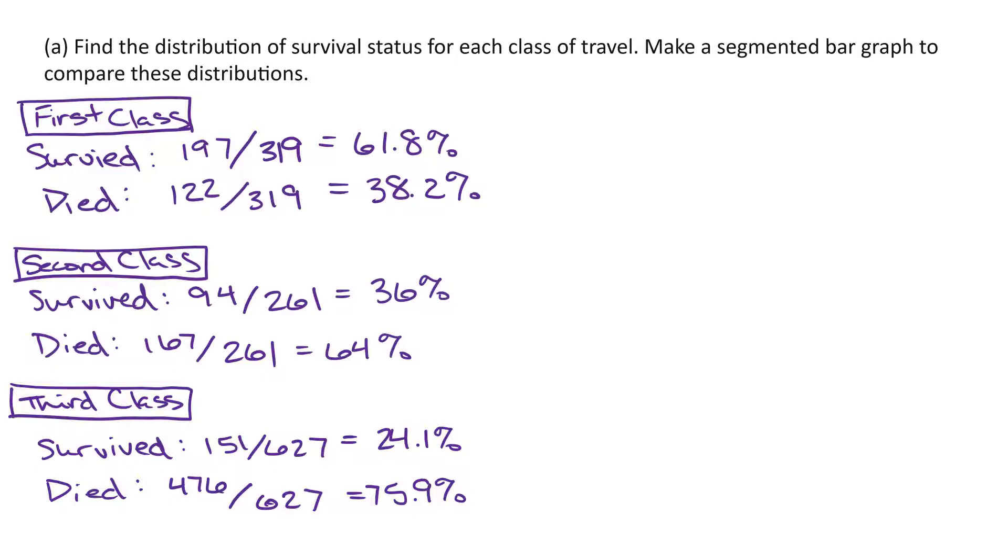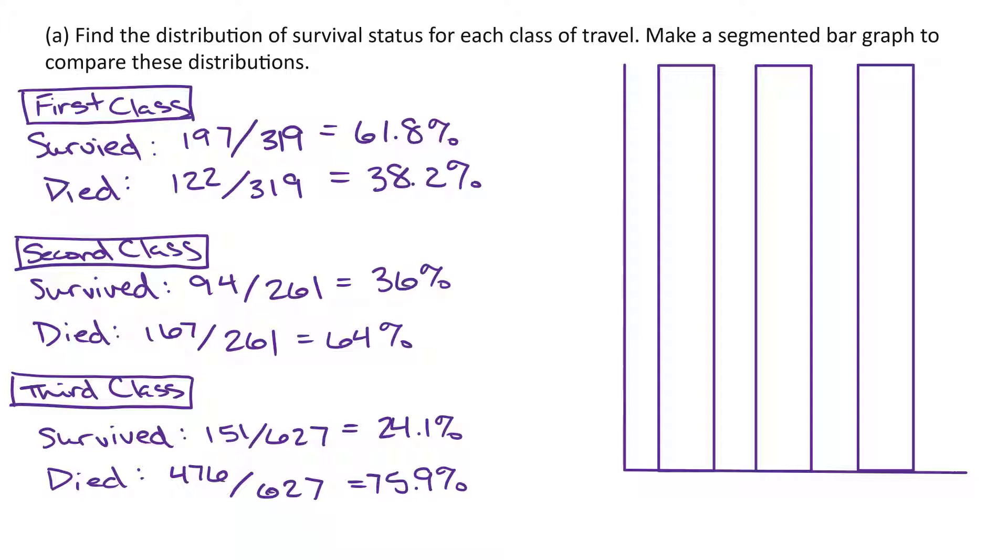Now we're going to go ahead and make our segmented bar graph. They asked us to find the distribution of survival status for each class of travel. And so when we make our segmented bar graph, we're going to have each class of travel: first class, second class, and third class. And then within the bar, we're going to represent the 100% area with two colors. One color for the proportion that survived and one color for the proportion that died. To make our segmented bar graph, we're going to start with three bars that fill the whole graph. Your three bars are going to be labeled by class. So at the bottom down here, we'll say this will be first class. This will be second class. And this will represent third class. And then as we always show, we're going to start at zero. And then we're going to make tally marks for up to 100%. So 10, 20. So we'll scale all the way up to 100%. And so on the vertical axis, this will be our percent. And then on the horizontal axis, we'll just label this variable the class of travel.